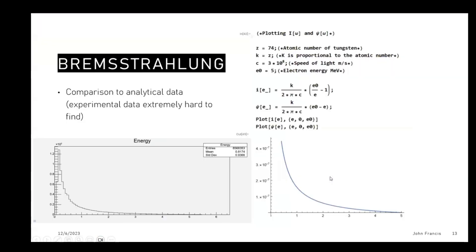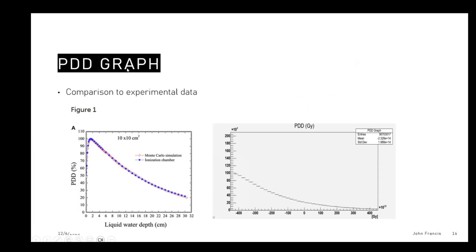Now for results. First, I wanted to make sure the Bremsstrahlung was happening correctly. The electrons coming in are 6 MeV, and I tested the energy spectra produced. It was hard to find experimental data, but I found analytical data showing the general shape of the energy spectrum — energy on the x-axis, number of particles on the y-axis. On the left is my program's data, and on the right is the analytical reference. For the PDD graph, the left shows an experimental result and the right shows what I got — pretty similar, with some error I still need to address.